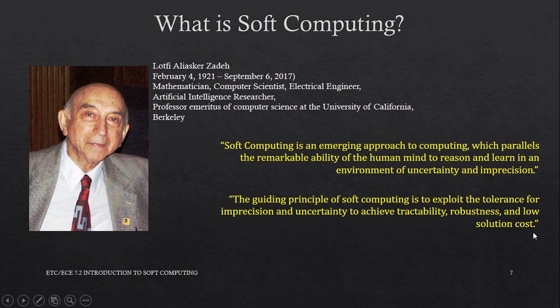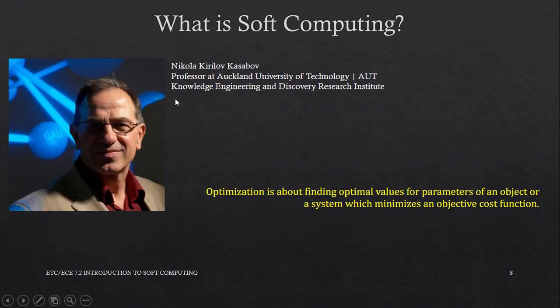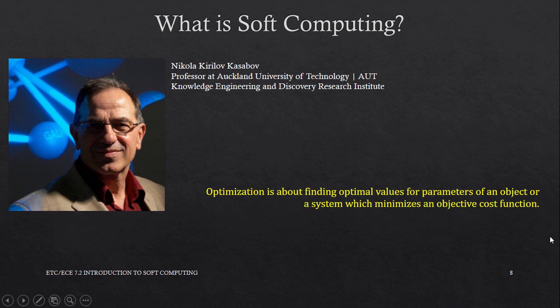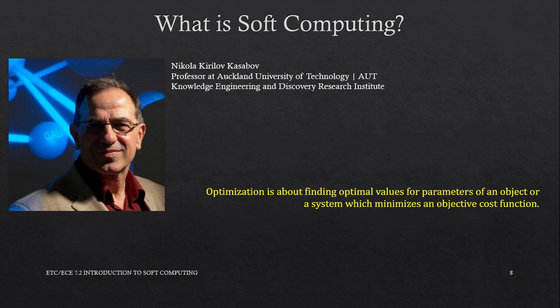Another computer scientist, Nikola Kasabov, advocated for optimization in soft computing. In 1998, he said that optimization is about finding optimal values for parameters of an object or a system which minimizes the objective cost function. Optimizing is simply having a system that will give the best possible outcome with the least cost. You try to find those design parameters in the system that will give you the least cost, yet a very good outcome. That is optimization.